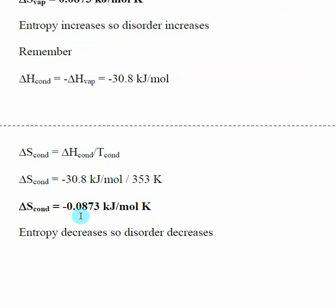I do the calculation and get the same number: −0.0873 kJ/mol·K. Does this make sense? My ΔH is negative — to go from a gas to a liquid, I give energy off, corresponding to a negative ΔH. And when I go from a gas, a highly disordered system, to a liquid, a less disordered system, the overall disorder of the system is decreasing, which corresponds to a negative ΔS. So when you're looking at the ΔS of transitions, take a second and think about whether it makes sense. In this case, a negative number does make sense.